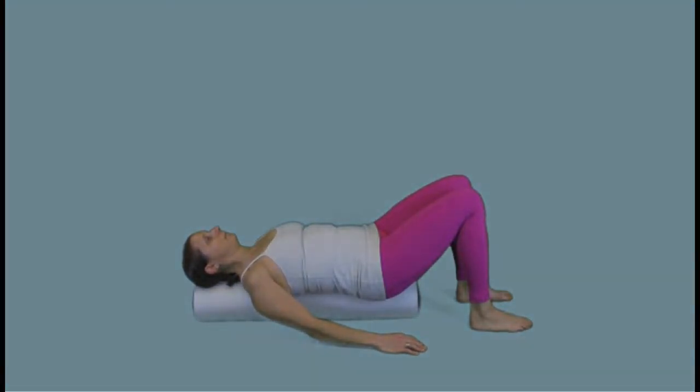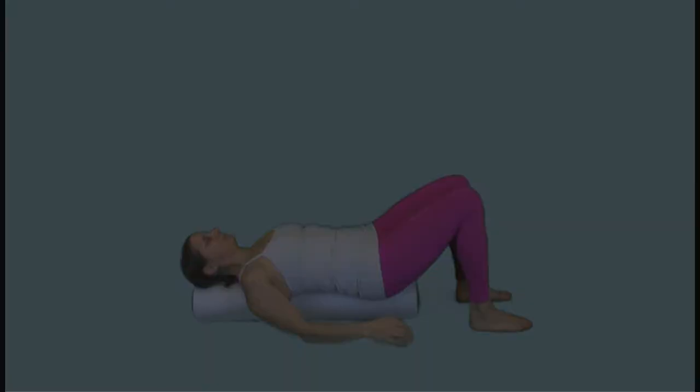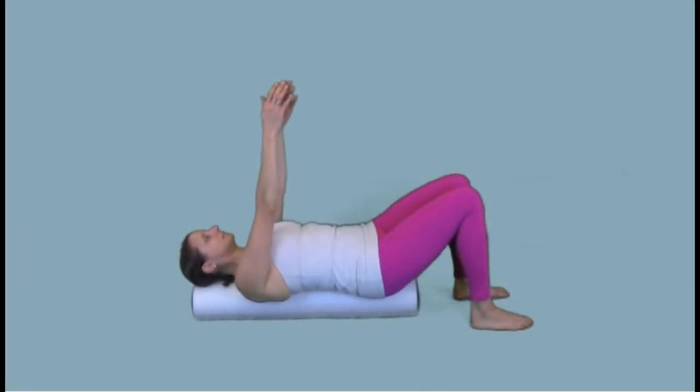Lie on the roller and bring your arms up towards the sky, palms facing each other. Inhale to reach up, exhale and let the shoulders fall down around the roller. Inhale reaching up, exhale and let the shoulder blades drop down in a slapping motion towards the roller. This serves to release the shoulders.